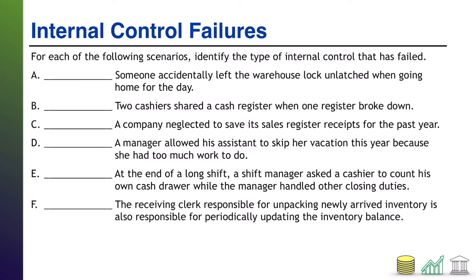When you're ready, come on back and I'll walk through the solution. All right, welcome back. So A — this is actually one of the easier ones. Someone accidentally left the warehouse lock unlatched when going home for the day. This is a failure in your physical controls. The lock on the warehouse is a physical impediment to getting into the warehouse and potentially stealing whatever's in it.